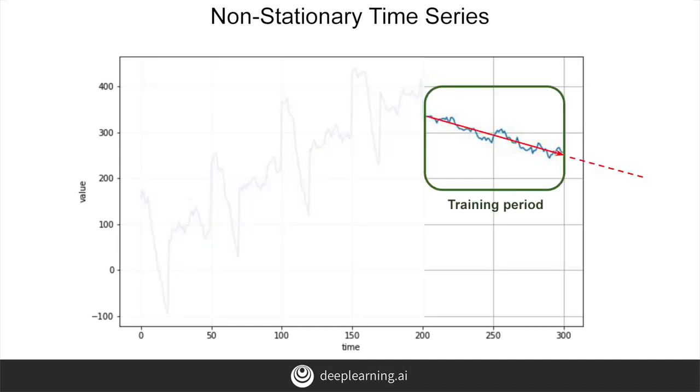To predict on this, we could just train for a limited period of time. For example, here where I take just the last 100 steps. You'll probably get a better performance than if you had trained on the entire time series. But that's kind of breaking the mold for typical machine learning, where we always assume that more data is better.